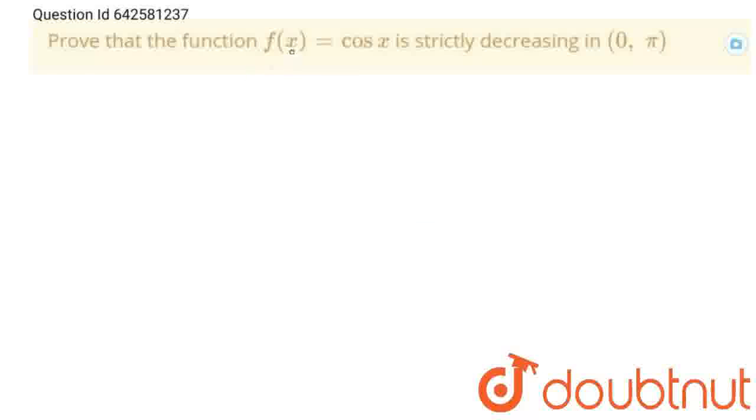Hello students, the question is: prove that the function f(x) = cos(x) is strictly decreasing in (0, π). So let's solve this problem.